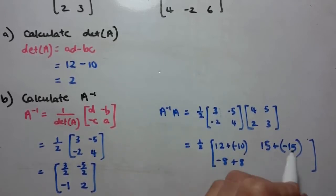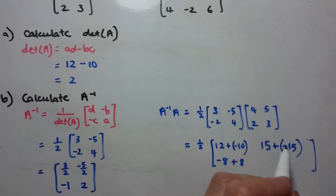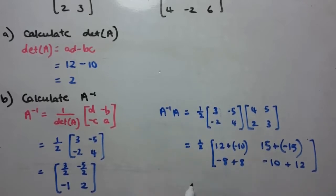Last element here is second row of second column, so second row times the second column, negative 2 times 5 is negative 10, and 4 times 3 is 12.